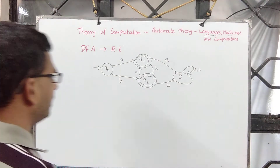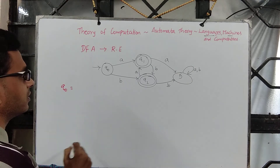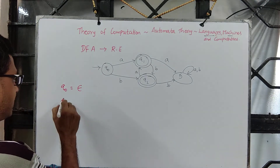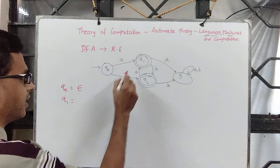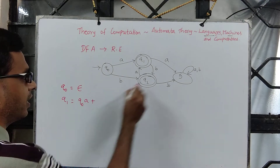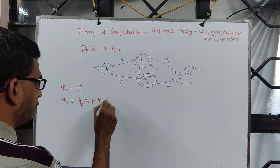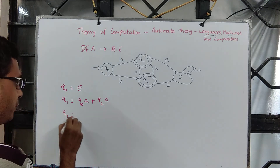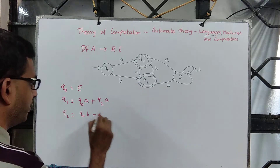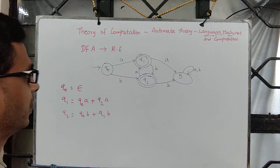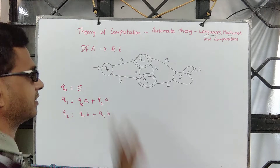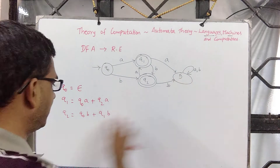That's precisely what the automaton accepts. Now let's look at the state equations. Q naught is the start state, so it accepts epsilon and there are no incoming arcs. For Q1, the incoming arc is from Q naught, so it is Q naught A. Another incoming arc gives Q naught B, plus one from Q1 B.